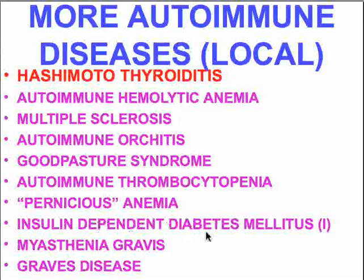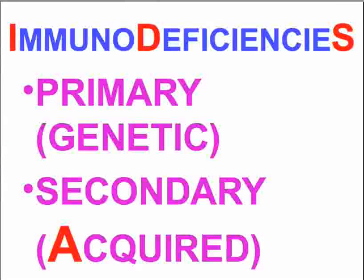In pernicious anemia, it's antibodies against intrinsic factor produced in the gastric mucosa. In insulin-dependent diabetes mellitus — type 1 or juvenile — it's against the patient's own beta cells in the islets, so you would get an autoimmune insulitis. In myasthenia gravis, it's antibodies against the interface between nerves and muscles — the neuromuscular junction. In Graves' disease, once again, it's antibodies against some thyroid elements. Isn't it interesting that the same disease process — autoimmune — that causes hypothyroidism can also cause hyperthyroidism? We'll move on to the immunodeficiencies in the next group. Thank you very much.